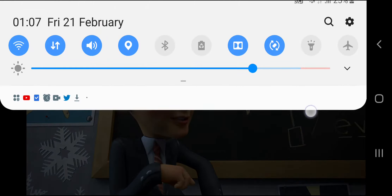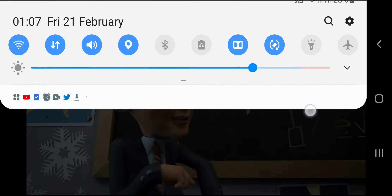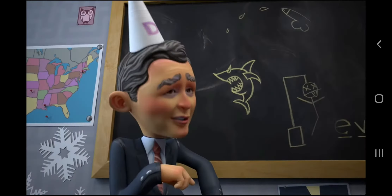Hi guys, today is the 21st of February 2020, and it's seven minutes past one in the morning over here in the UK. I just want to do a quick interpretation for today's date, February the 21st, and potential events that could take place today. There is a layer to this interpretation where it could refer to 2021, and I'll explain in just a minute — hopefully this video will just take less than five minutes.